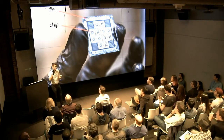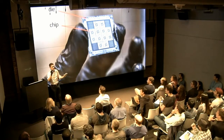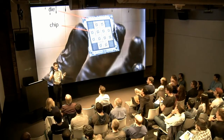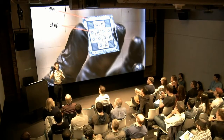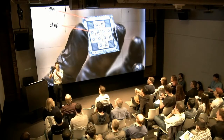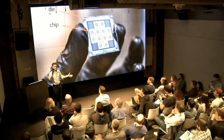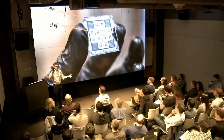Rigetti has two sites: one in Berkeley and one in Fremont. The Fremont site fabricates the chips, while the Berkeley site measures them.